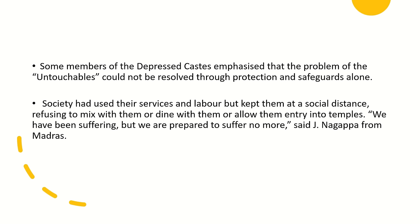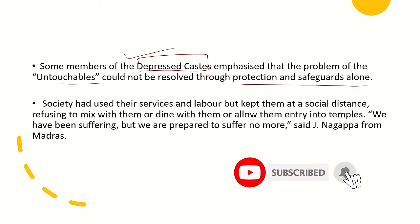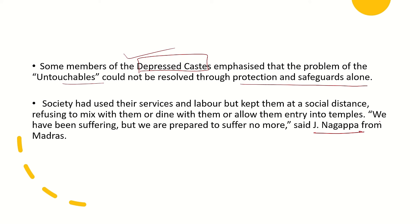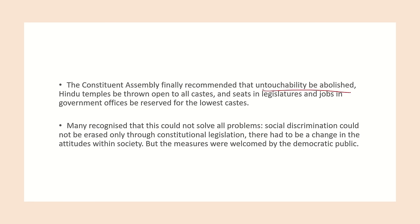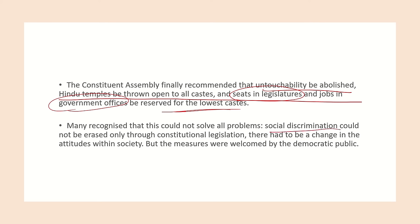Some members of the depressed castes emphasized that the untouchability problem would not end merely through protection or safeguards — it would end only when people actually eliminated the distance and the gap that had been created. Jay Nagappa said they had already suffered greatly and did not want to suffer anymore. The Constituent Assembly finally decided: untouchability would be abolished, Hindu temples opened to all castes, and seats in legislatures and government jobs would be reserved for lower castes. Many recognized that the problem of social discrimination cannot be solved until people change their attitude and mindset in society.